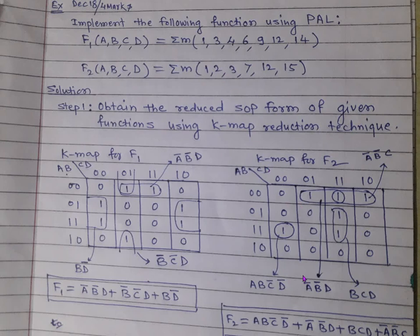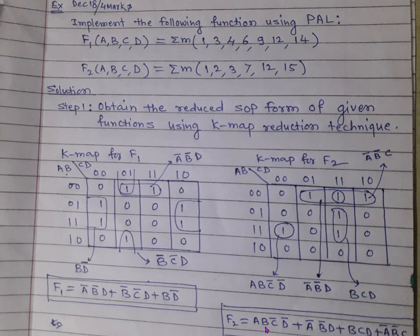For F2, fill the KMAP: place 1s at minterms 2, 3, 7, 12, 15 and corresponding positions. After grouping, for one group A is 1, B is 1, C is 0, D is 0, giving A·B·C̄·D̄. Similarly, we get terms A̅·B̄·D, B·C·D, and A̅·B̄·C. So F2 = A·B·C̄·D̄ + A̅·B̄·D + B·C·D + A̅·B̄·C.